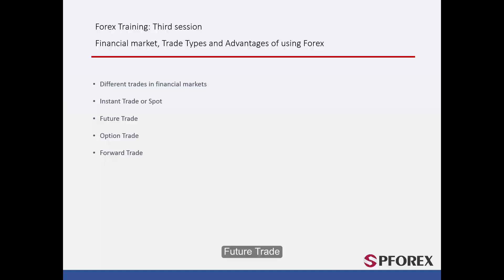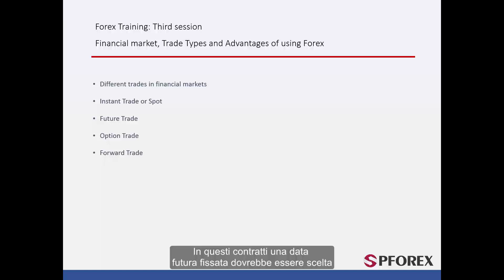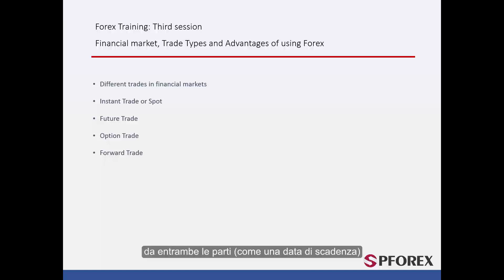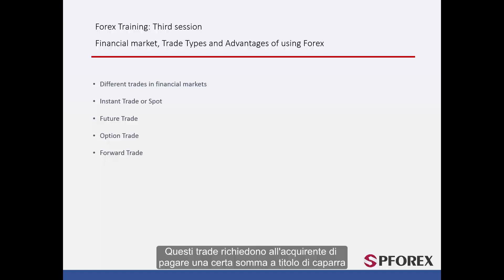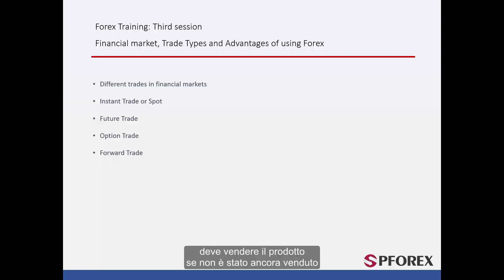The second type of trade is an upcoming or future trade. In these contracts, a fixed future date should be settled on by both parties as an expiry date. These trades require the buyer to pay a certain amount as a deposit. If the expiry date is reached, then the owner must sell the given product if it has not been sold yet.